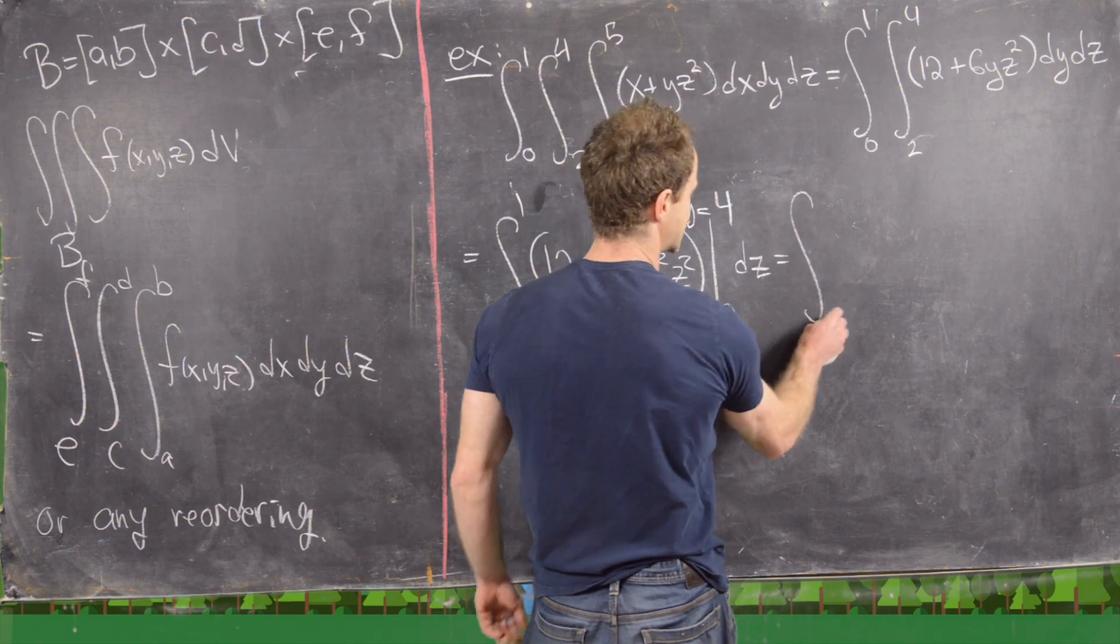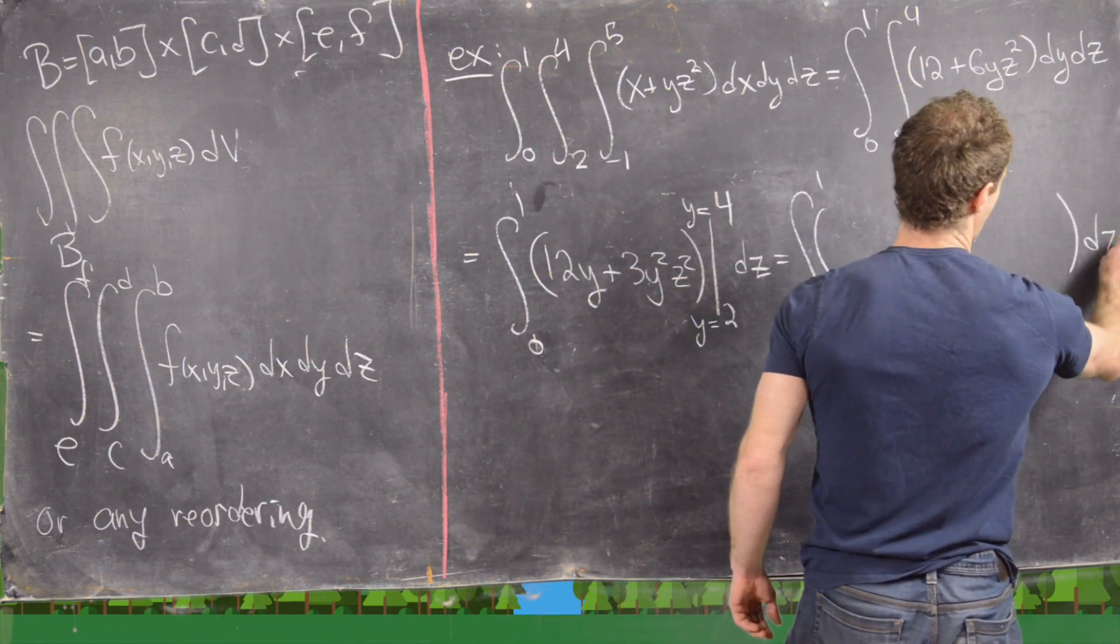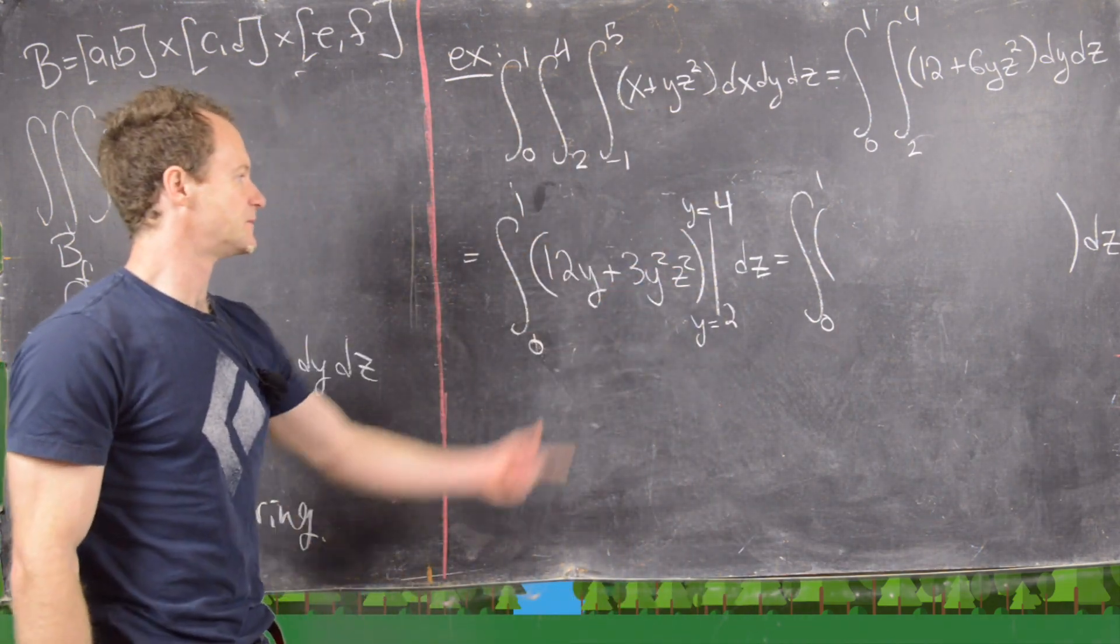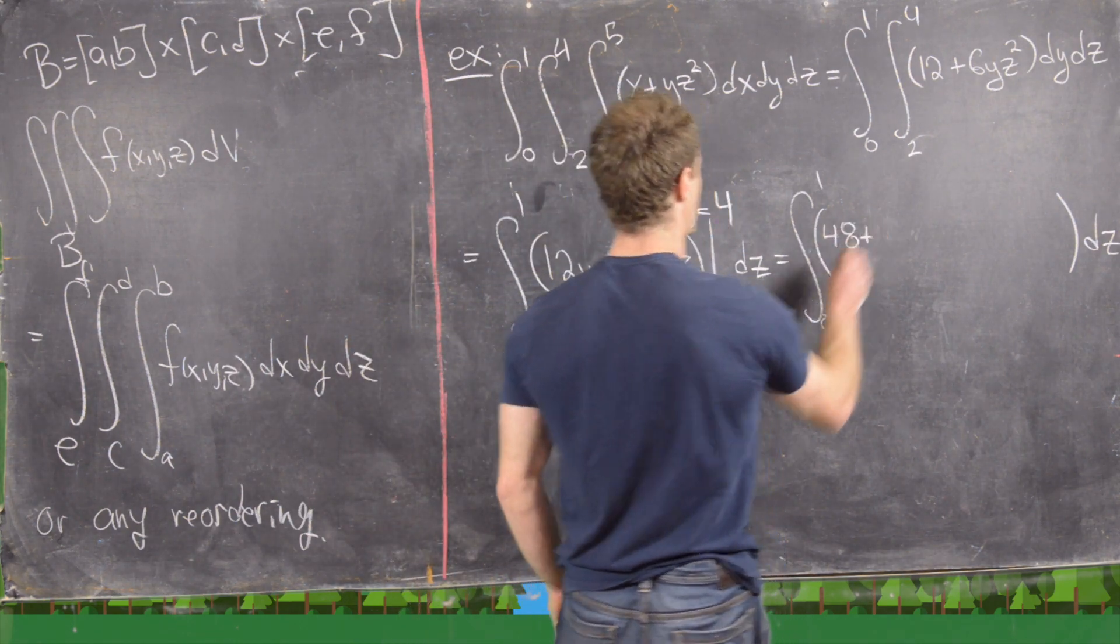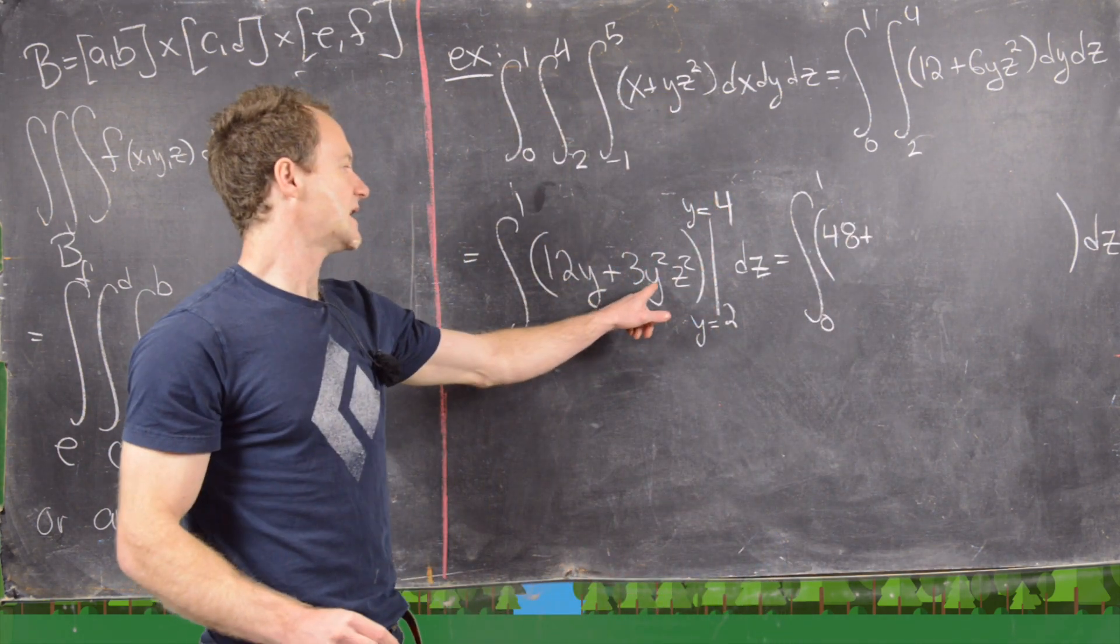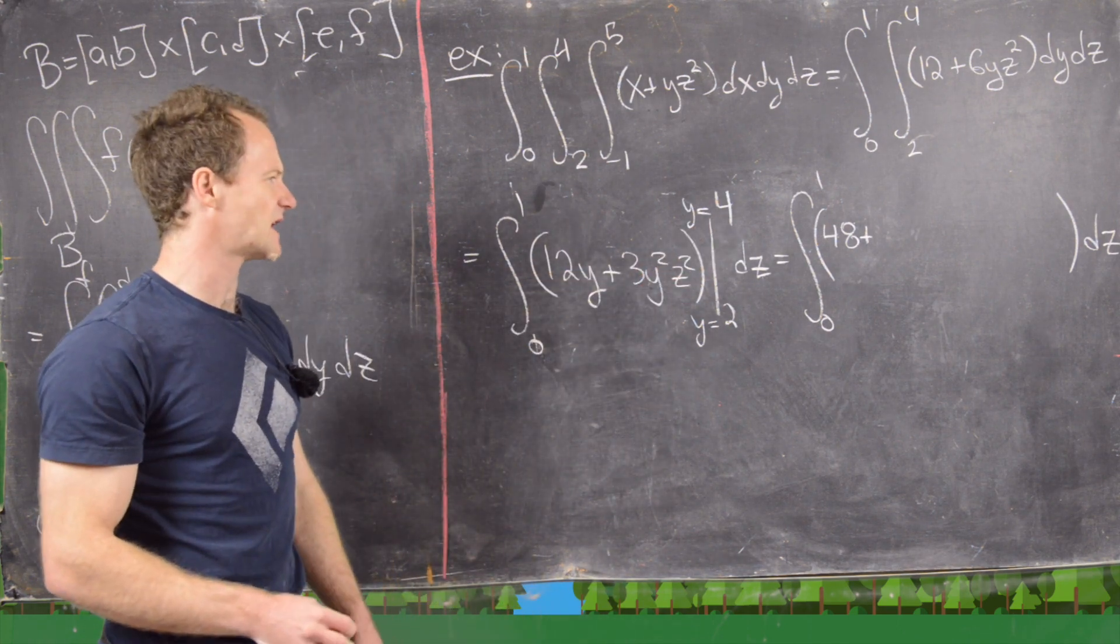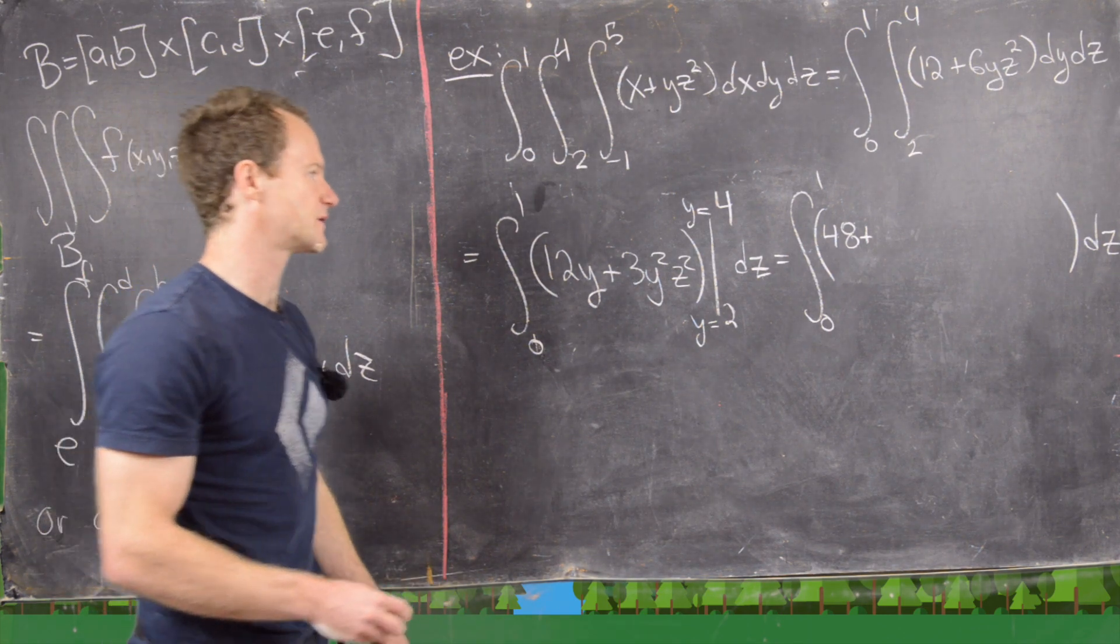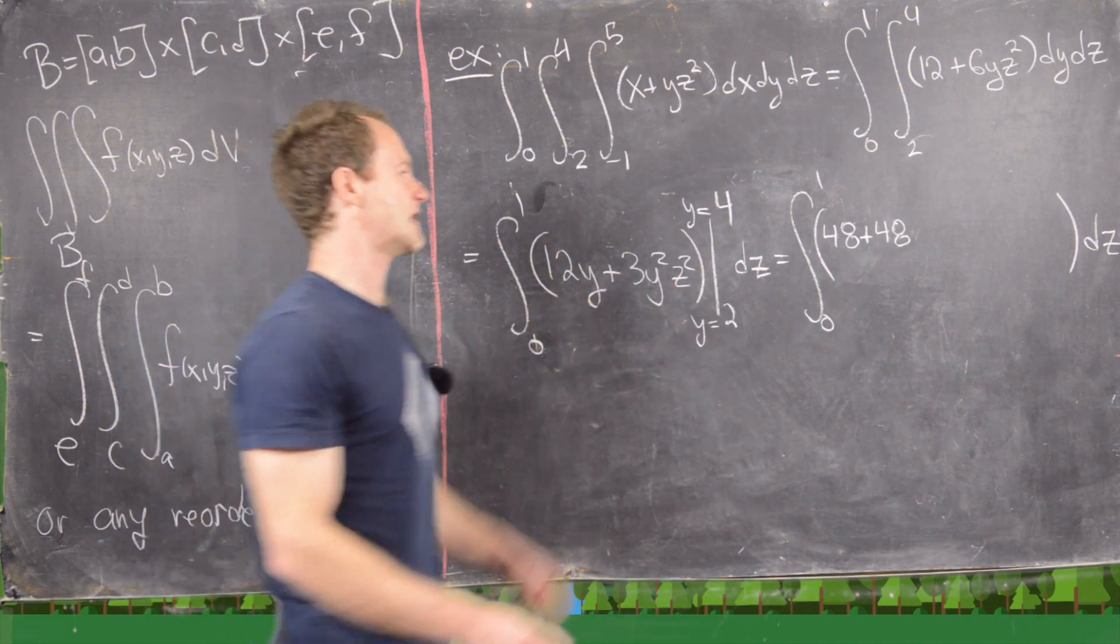So let's see what we get for this. This is the integral from 0 to 1 of some stuff. All of this is inside a dz integral. So if we plug 4 into this, we'll get 48 plus 3 times 4 squared. So that's 3 times 16. So I believe 3 times 16 is also 48, and then we have z squared.